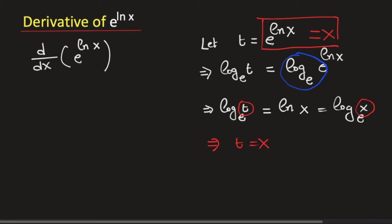Now put this value here. So this derivative will be equal to the derivative of x, and we know that the derivative of x is 1. So finally we get the derivative of e to the power ln x is equal to 1.